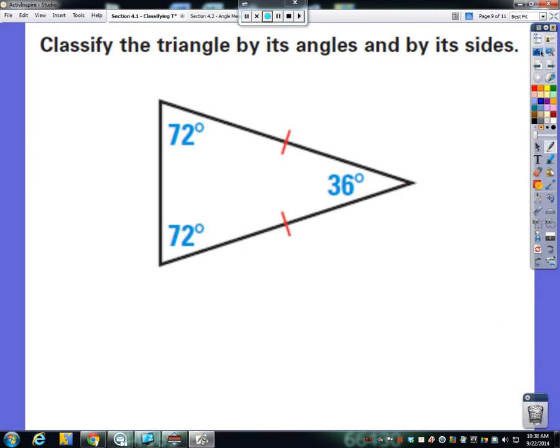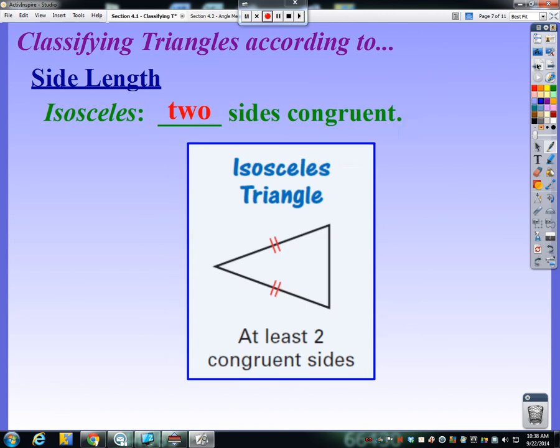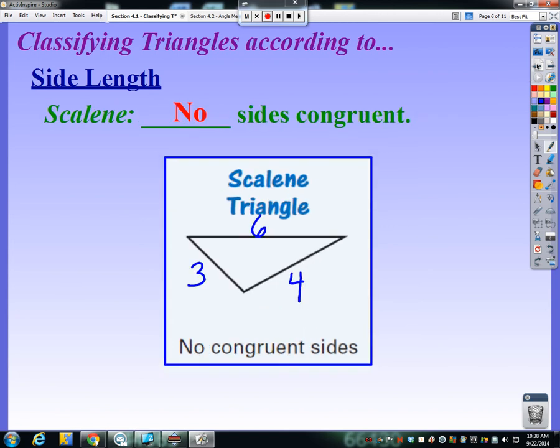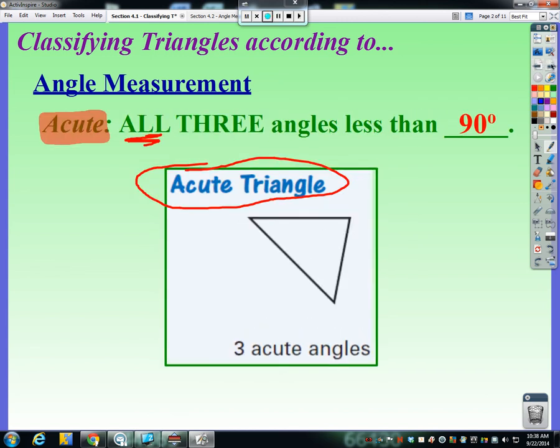We're going to look at two examples. This one says classify the triangle by its angles and by its sides. For its sides, we're going to use the last three terms: either equilateral, isosceles, or scalene. And then by angles, we're going to use equiangular, right, obtuse, or acute.